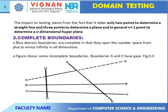Next one is complete boundaries. Nice domain boundaries are complete in that they span the number space from plus to minus infinity in all dimensions. A figure shows some incomplete boundaries. Boundaries A and E are the incomplete boundaries; the remaining B, C, and D are complete. A and E are the gaps.